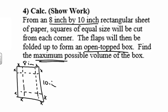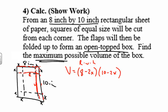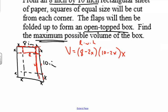What is the maximum possible volume of the box? We have to figure out the volume, which is length times width times height. The length, in terms of X, is going to be — well, this whole length is 8, minus these two little flaps that we're cutting out, so 8 minus 2X. The width is going to be 10 minus these two little flaps, so 10 minus 2X. And then if we fold this up, we see that our height is actually going to equal X.